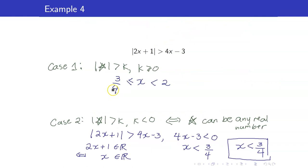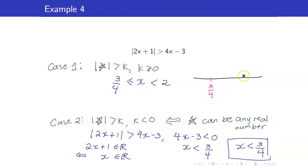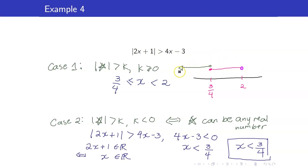Going back to our summary: for Case 1 we obtained 3/4 ≤ x < 2, and for Case 2 we obtained x < 3/4. Taking the union of these two cases: combining 3/4 ≤ x < 2 and x < 3/4 gives x < 2. That is the final answer.